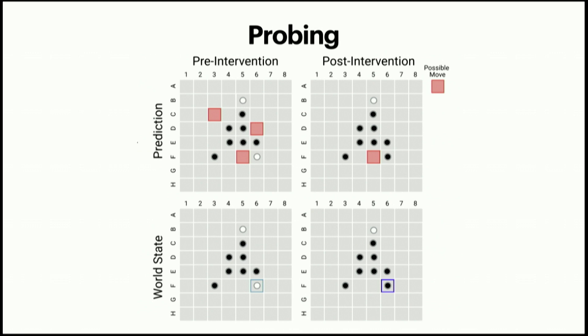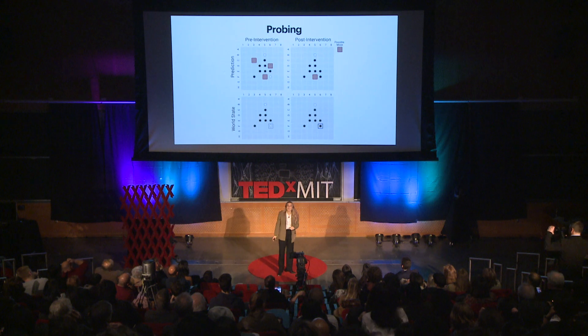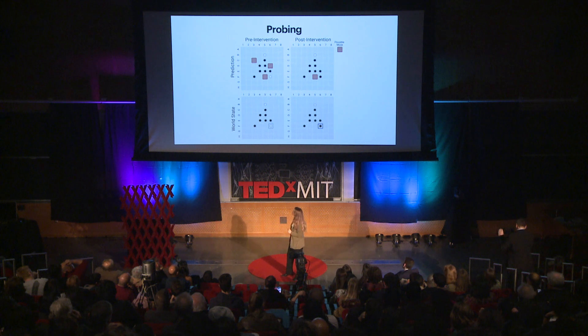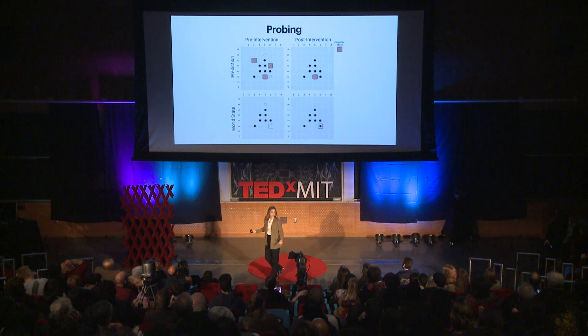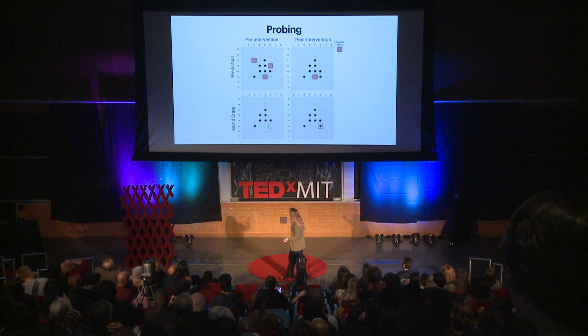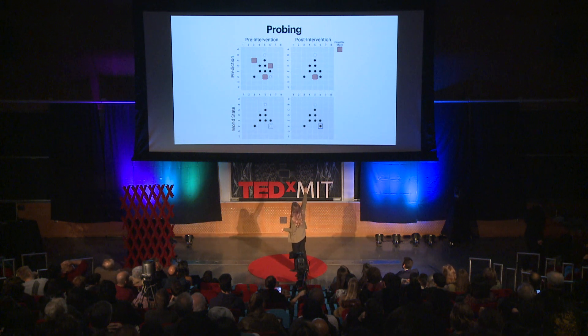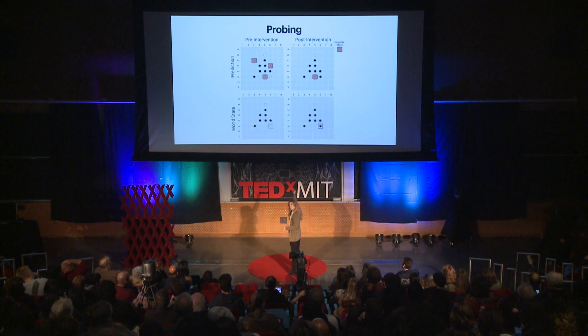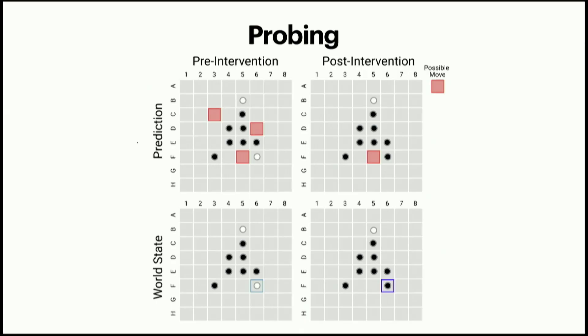Through this intervention and the probing work, we change things so the model instead thinks the world state looks different — there's a black piece where there was once a white. And now the model's prediction also changes. This is really cool because it means we have found something causal in the internal representations of the model.